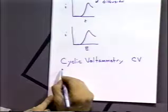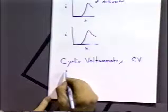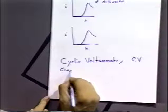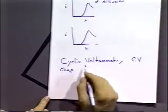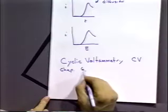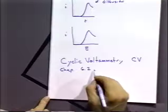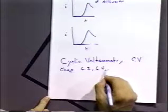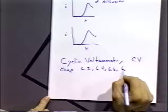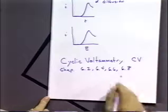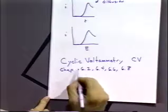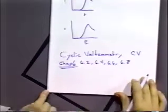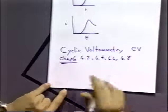I'm going to stop here and remind you - there's a problem set for chapter 6 that I'd like you to do. That would be chapter 6: do problems 6.2, 6.4, 6.6, and 6.8. Those will have to do with cyclic voltammetry.